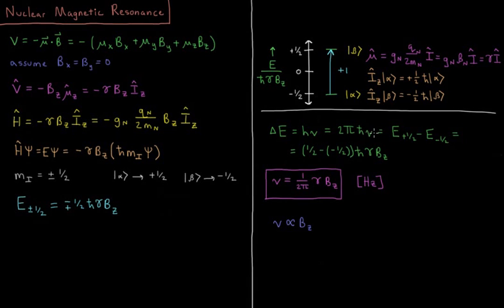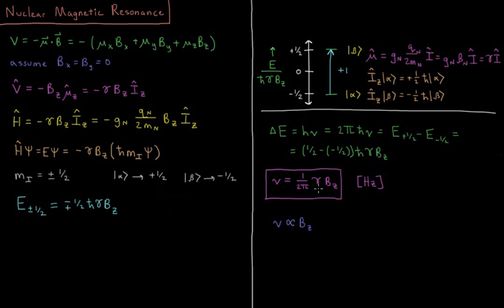Solving for the frequency at which this nuclear magnetic resonance is going to occur — where we're transitioning between the alpha and beta states of a given nucleus in the presence of a magnetic field — the frequency is ν = (1/2π)·γ·Bz, in units of hertz. Notice the frequency is proportional to the magnetic field in the z direction and to the magnetogyric ratio. For a given nucleus, the magnetogyric ratio is fixed, so the only thing determining what frequency this magnetic resonance occurs at is the strength of our magnetic field aligned in the z direction.